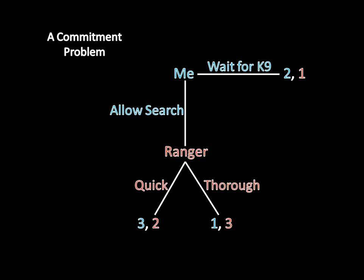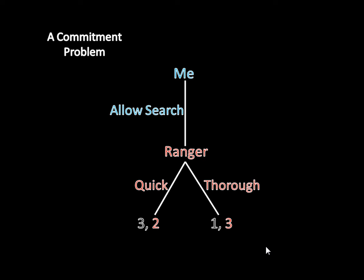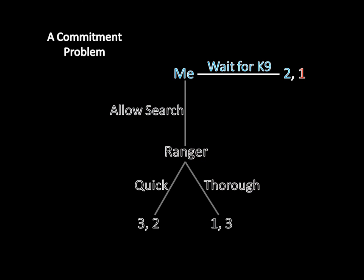We're going to solve the game using backward induction, starting with what happens if I allow the ranger to search. That gives him two options: a quick search or a thorough search. Isolating the ranger's payoffs, a thorough search gives him three points whereas a quick search only gives him two. So if I ever allow the ranger to search, he will be thorough. Given that, I compare the two outcomes: if I allow the search, he will be thorough and I get one point, or I can wait for the canine unit and get two points. Two is better than one, so I will wait for the canine unit — and that's our subgame perfect equilibrium.